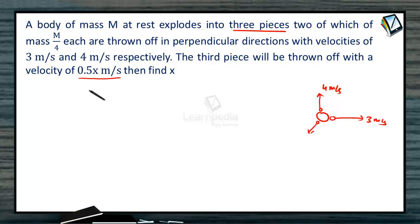So what we will do, we will apply law of conservation of linear momentum. Conservation of momentum: the resultant momentum of the two pieces should be equal and opposite to the momentum of third piece. M by 2, this is M by 4, this is M by 4.